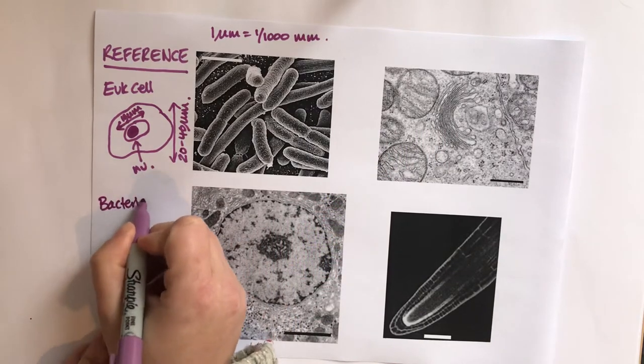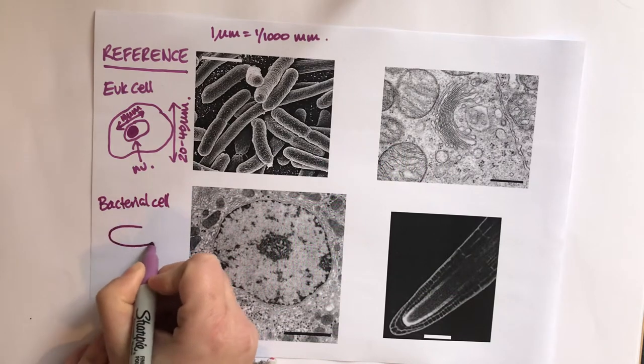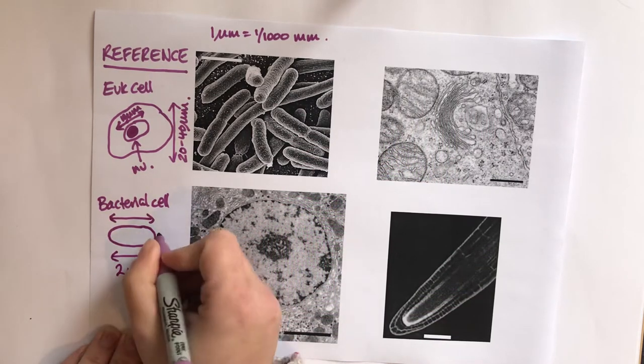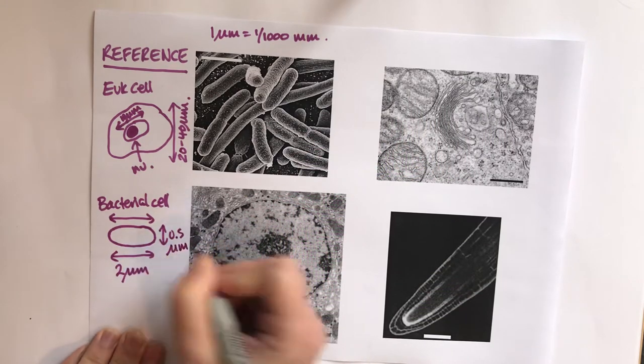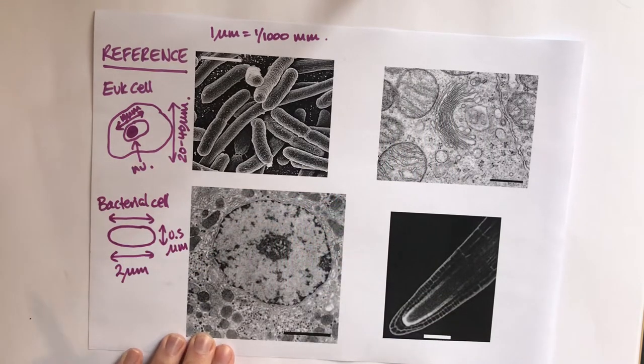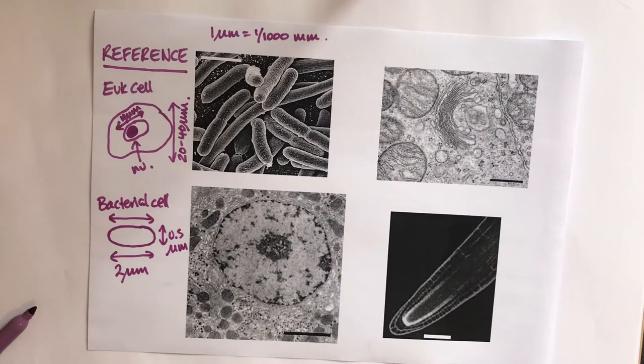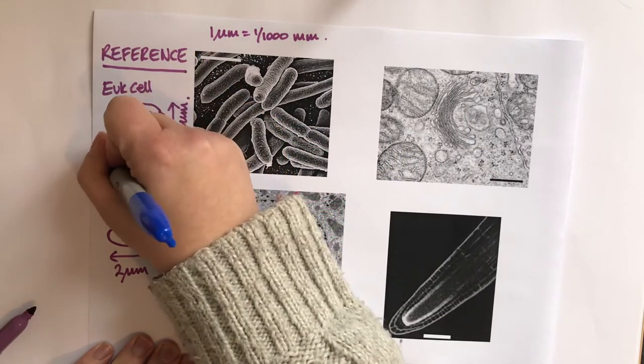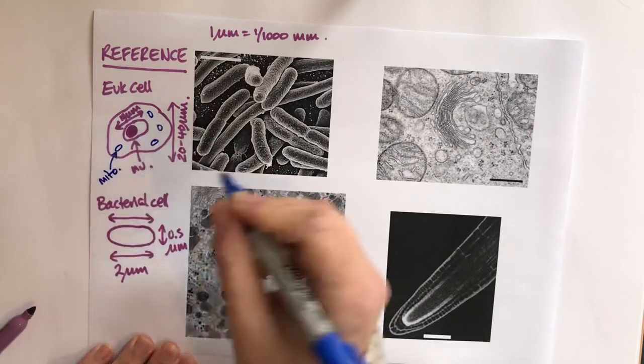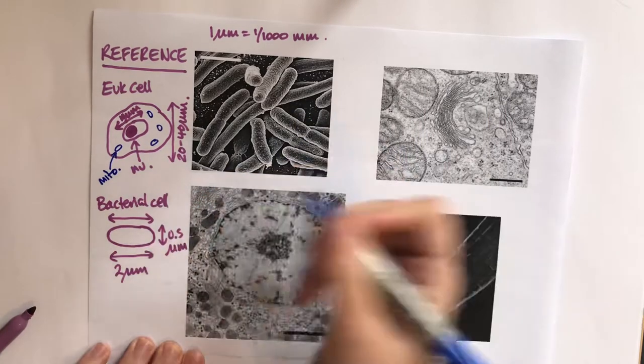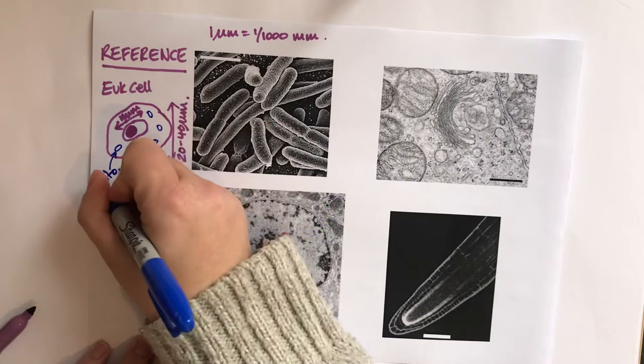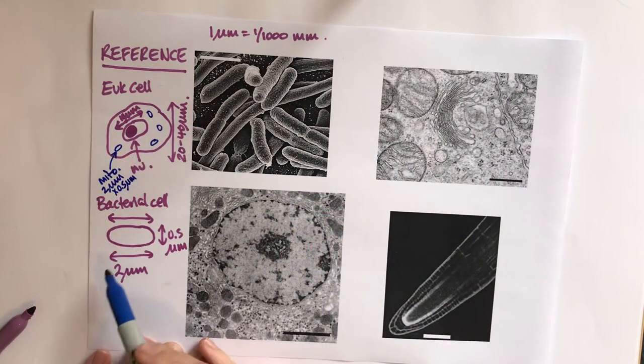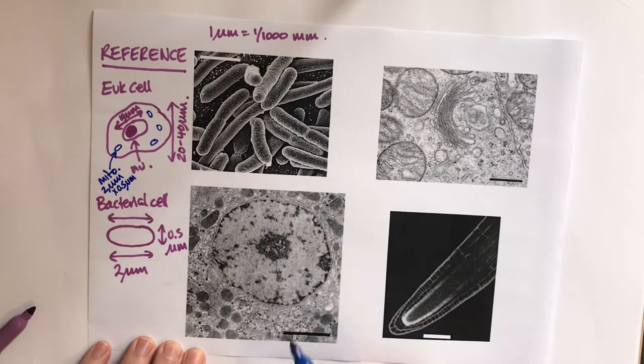For a bacterial cell, if we've got a rod shaped cell like that, that would be about 2 micrometers by about 0.5 micrometers. Bacterial cells are roughly a tenth of the size of a eukaryote. In our eukaryotic cell we have mitochondria, and because we know from endosymbiotic theory that the mitochondria were originally bacteria, they've stayed at roughly the same sort of size. So mitochondria is also about 2 micrometers by 0.5 micrometers.